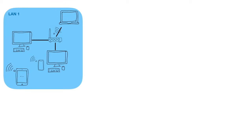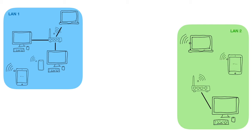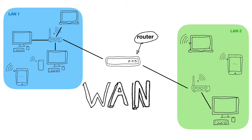If we want to, we can connect multiple LANs to each other. We will need another device to do so — a device that prepares the route between the switches. Therefore, that device is called a router. Combining multiple local networks or LANs leads to a bigger network with a wider range: a WAN, or Wide Area Network.